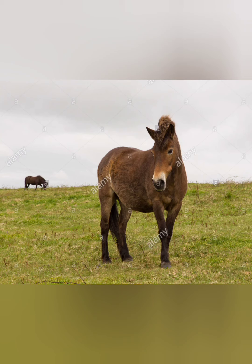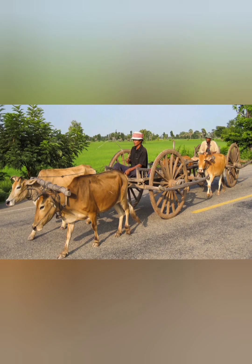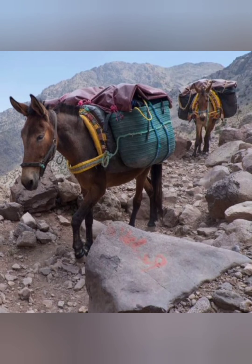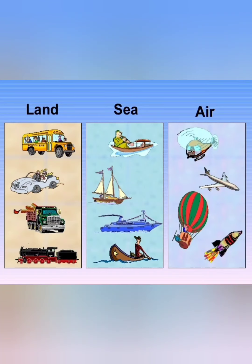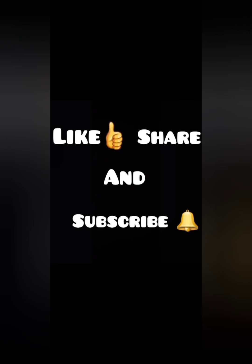In this chapter we have learned about different means of transport — what kinds of transport we use in villages, in hilly areas, on land, on water, and by air. We also learned what is the cheapest and the most expensive means of transport. I hope this is clear to you. For better understanding, go through the video again. Thank you so much, God bless you all.